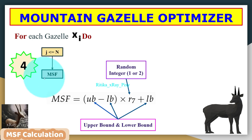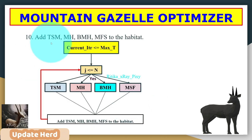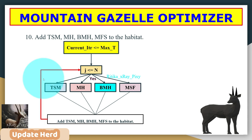The fourth model is migration to search for food. Male gazelles roam to find food due to their high speed and jumping ability. The mathematical model uses uv = (upper bound − lower bound) × r7 + lower bound, where r7 is a random value, keeping solutions within bounds. The solutions from all four models — territorial solitary males, maternity herd, bachelor males herd, and migration — are added to the habitat, and the condition is checked again.